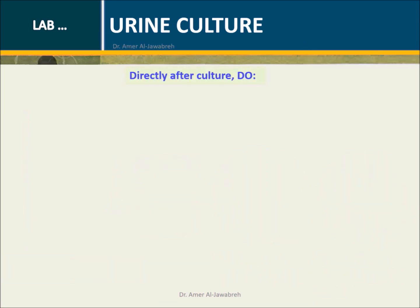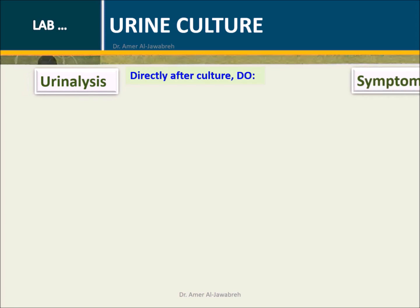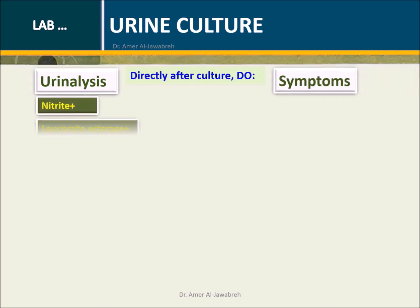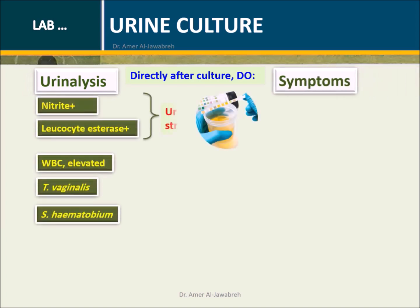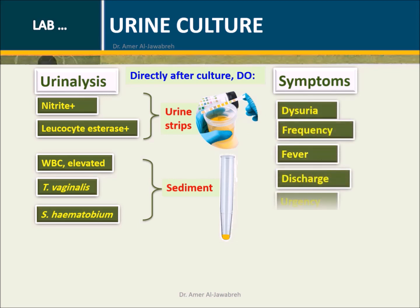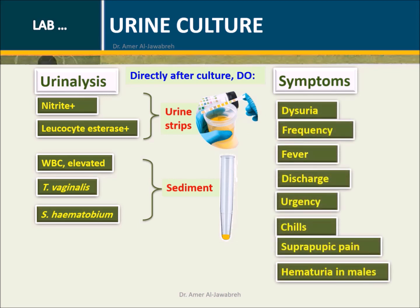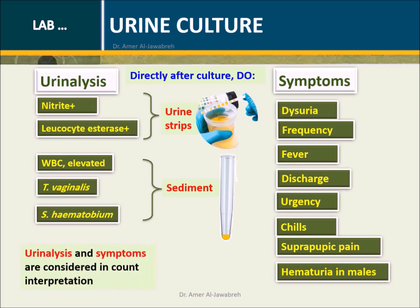Directly after culture, do urinalysis and assess symptoms. Test for nitrite and leukocyte esterase by urine strips. Examine sediment for white blood cells and parasites. Check for the presence of relevant symptoms. Urinalysis and symptoms are considered in count interpretation.